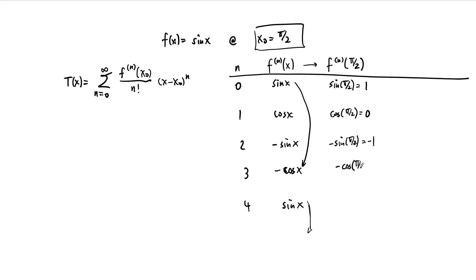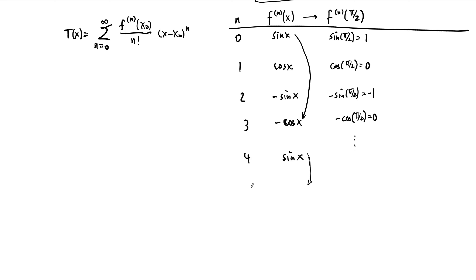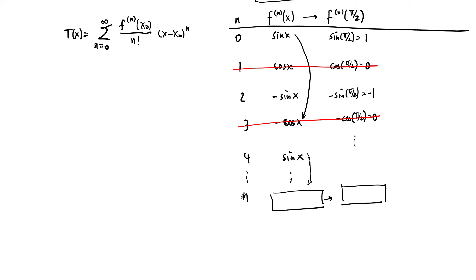We're starting to notice the pattern. The values go one, zero, negative one, zero, one, zero, negative one, zero, and so on. We notice that it only applies to the even terms — we can cross off all the odds. So this is evens only. Really, this is going to be two n. When our index is two n, this gives us negative one to the power n, because n starts at zero. Negative one to the zero is one, negative one to the one is negative one, et cetera. That's our value of f^(n) at pi over two.